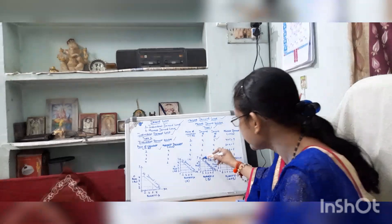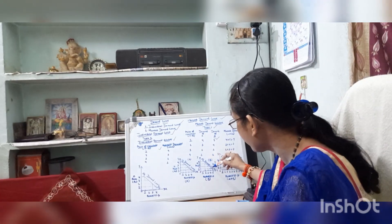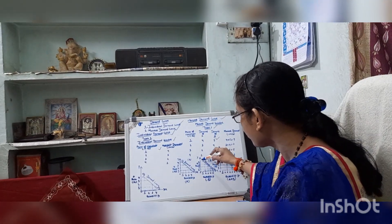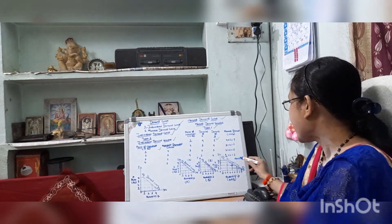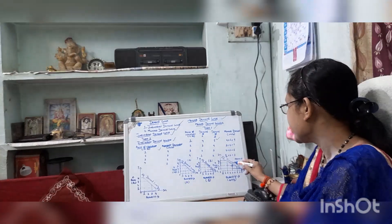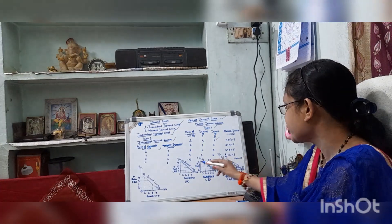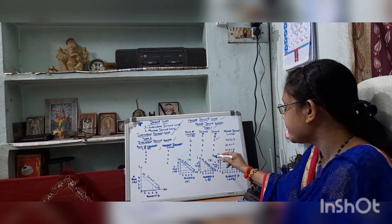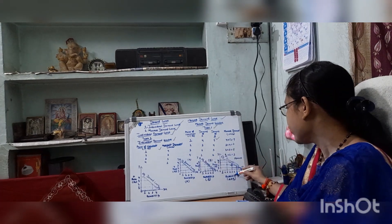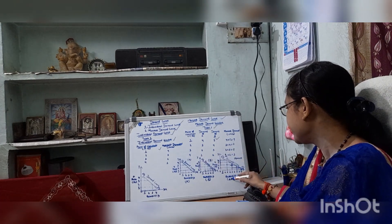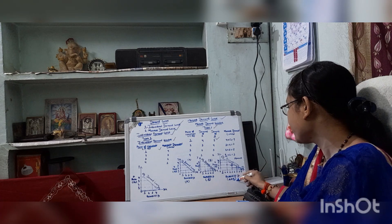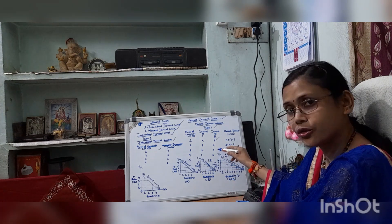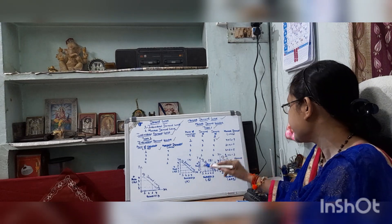The market demand curve is the aggregate summation of the demand curve of A and the demand curve of B. This OX axis shows the quantity of A plus B, and the OY axis shows the price.